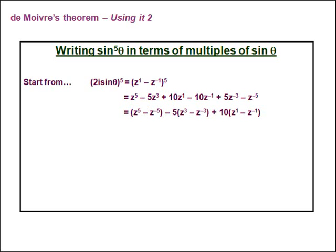We then group terms according to their powers: we have (z⁵ − z⁻⁵), then −5(z³ − z⁻³), and finally 10(z − z⁻¹). Using our earlier results: z⁵ − z⁻⁵ = 2i·sin(5θ), and z³ − z⁻³ = 2i·sin(3θ), etc.